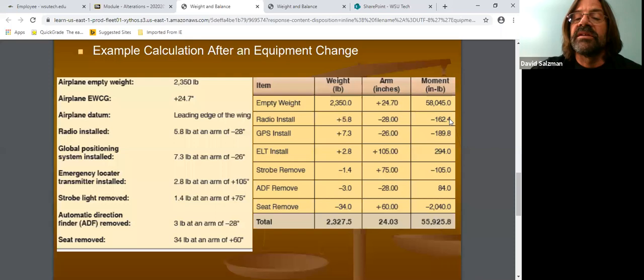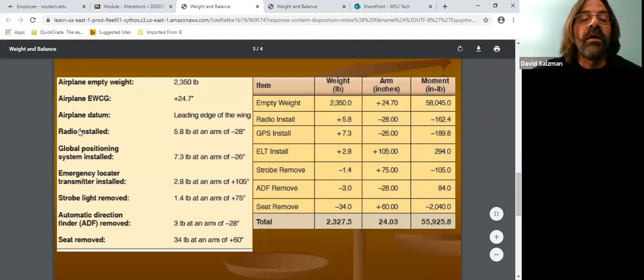As you can see, negative times a positive will give us a negative moment. It doesn't matter whether it's negative or positive, so don't get hung up on that. Just make sure that we do the math properly because it will change the end result at the bottom. And then the next one is the radio installed. It is 5. Oh, I already did that. Global Positioning System installed.